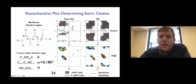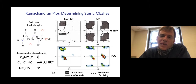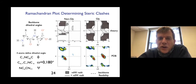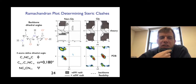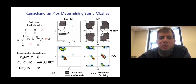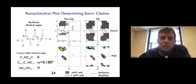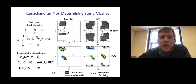A Ramachandran plot has the backbone dihedral angle phi on the horizontal axis and psi on the vertical axis. The range plotted is typically from negative 180 to 180 degrees, which is common convention for backbone dihedral angles. For side chain dihedral angles, they typically go from 0 to 360. A Ramachandran plot is a two-dimensional way of plotting the values found in proteins.